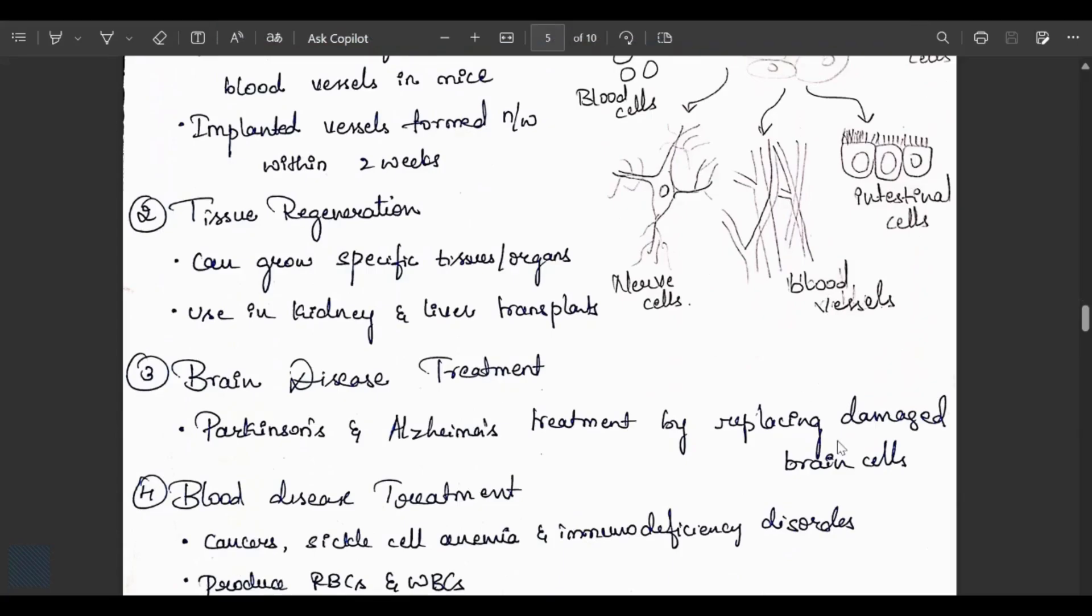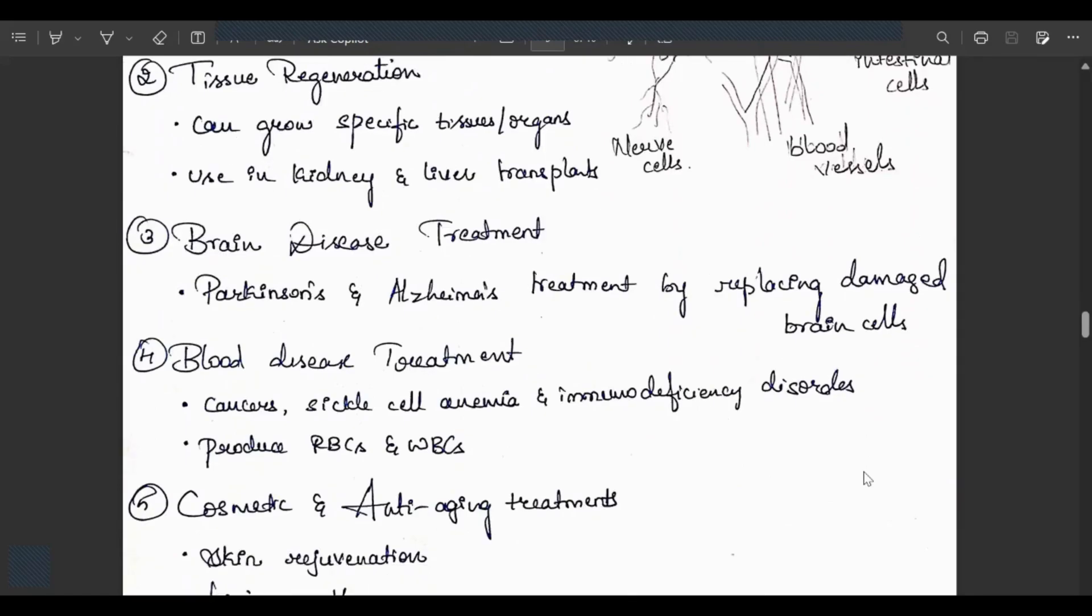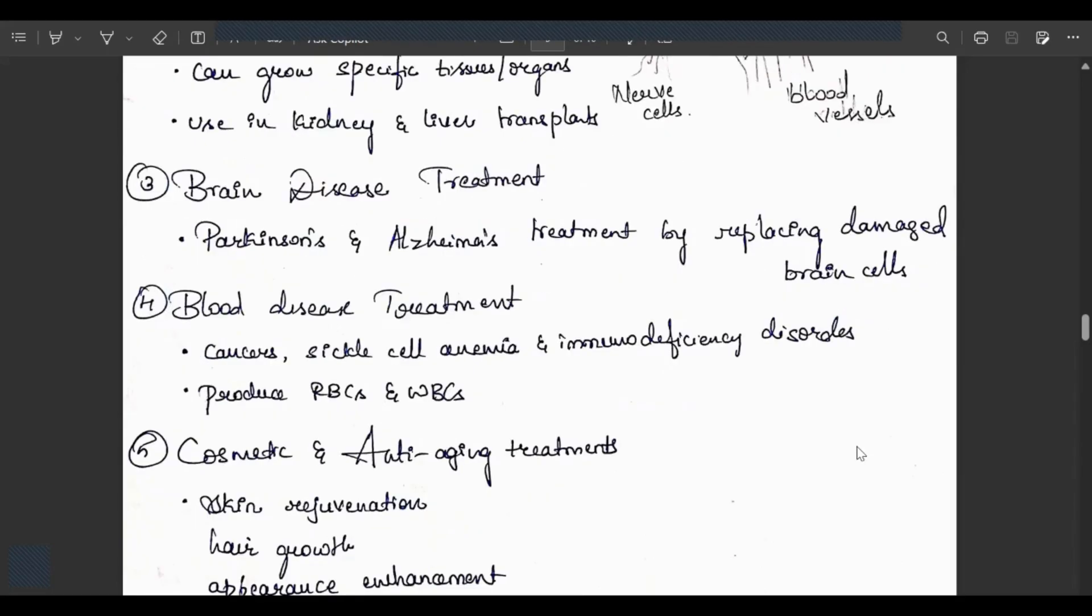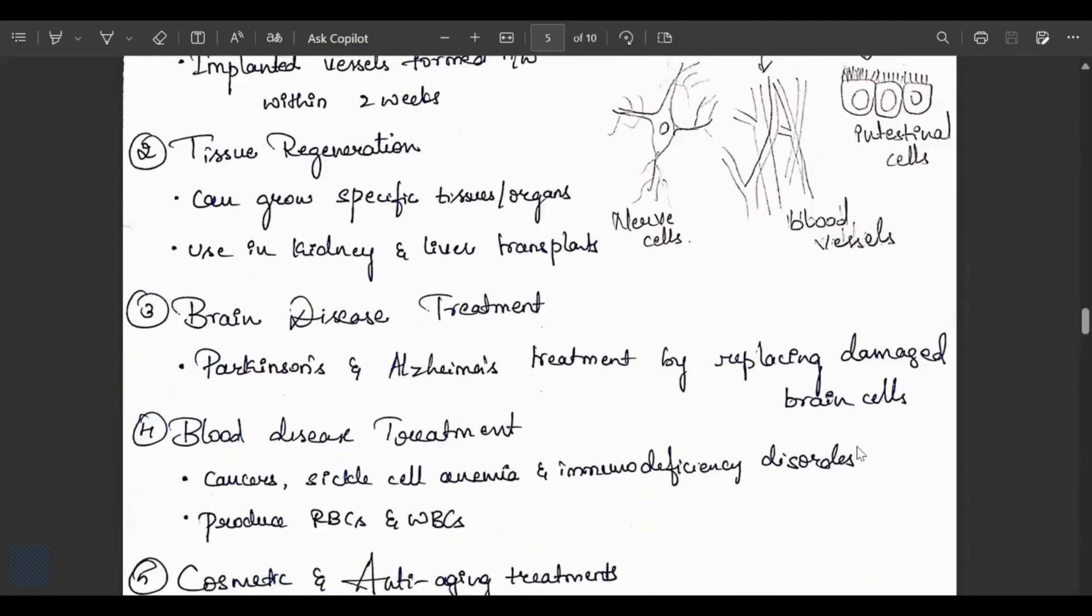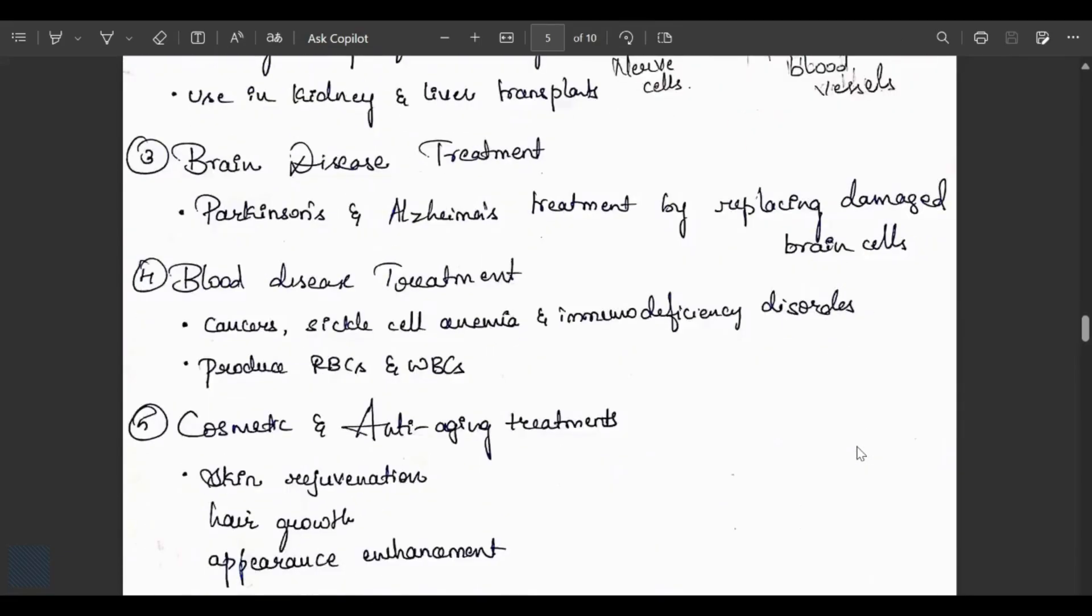Blood disease treatment including blood cancer, sickle cell anemia and immunodeficiency disorders, producing RBCs and WBCs. Cosmetics and anti-aging treatments use stem cells for skin regeneration, hair growth and appearance enhancement. These are some applications of stem cells.